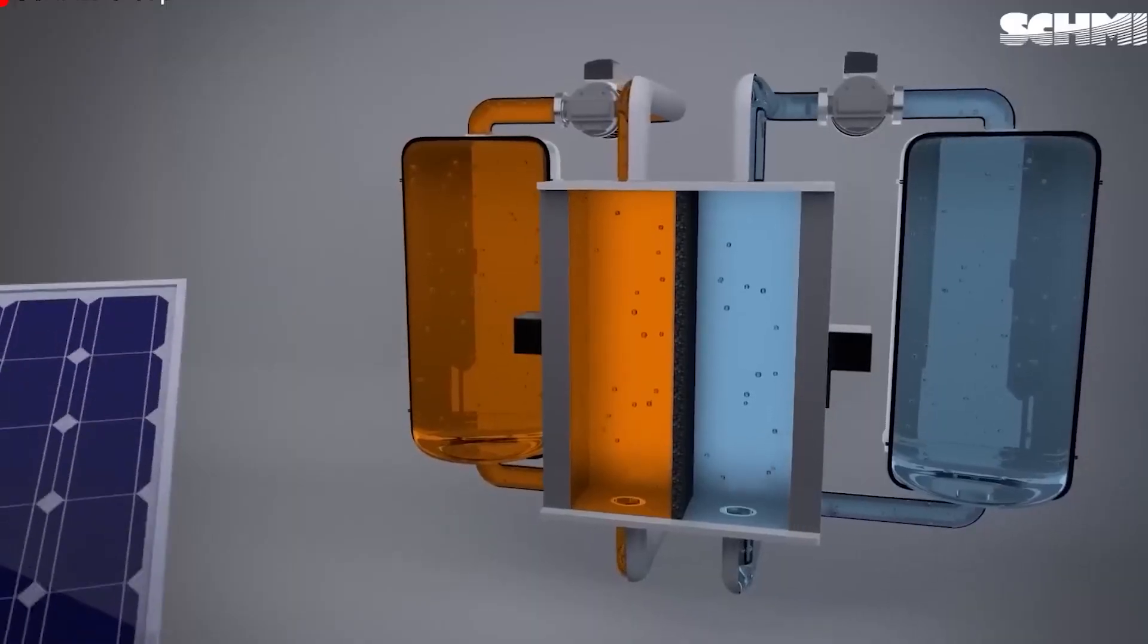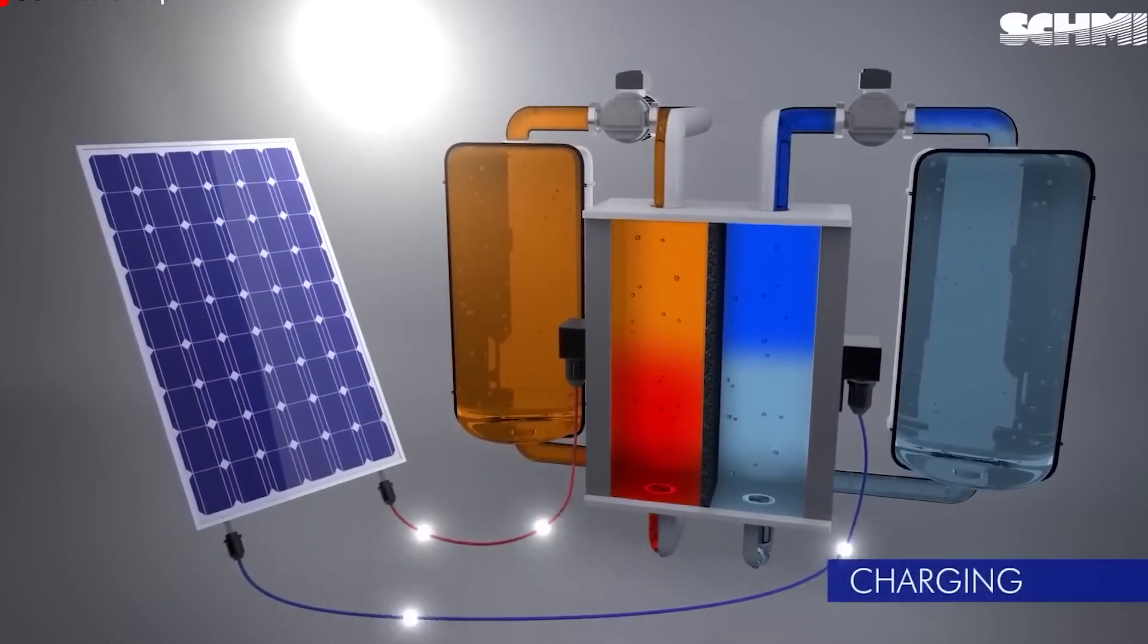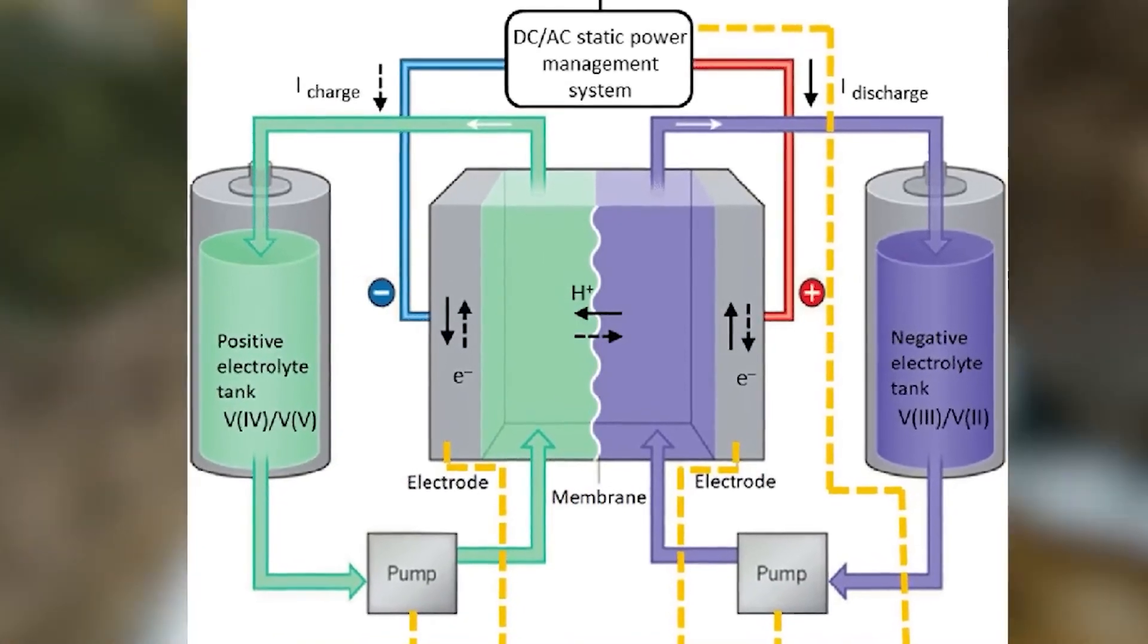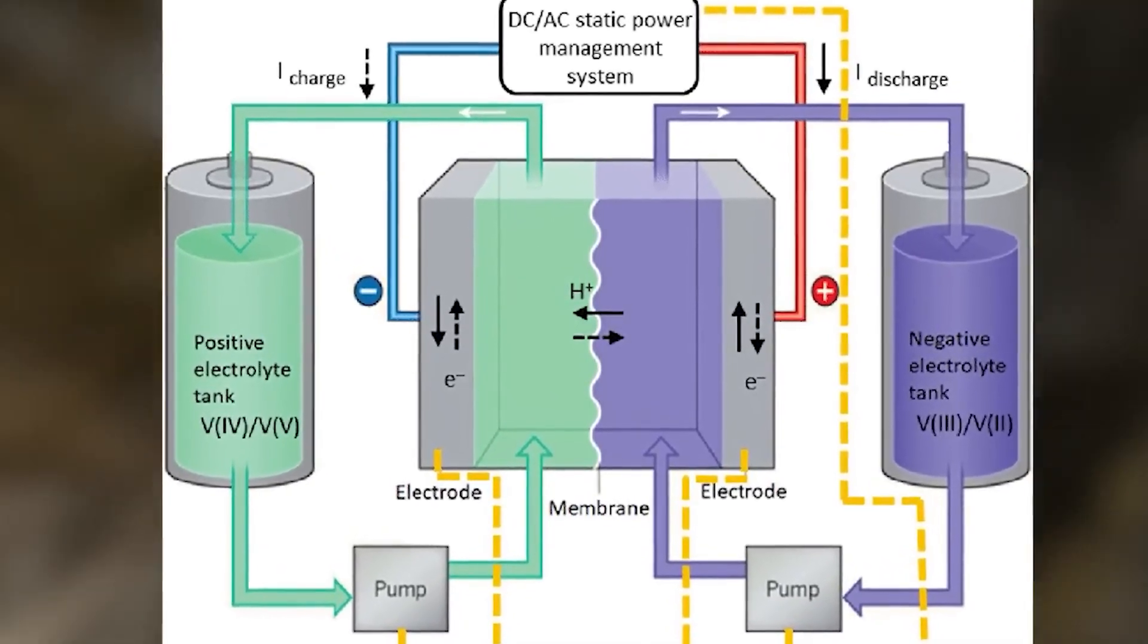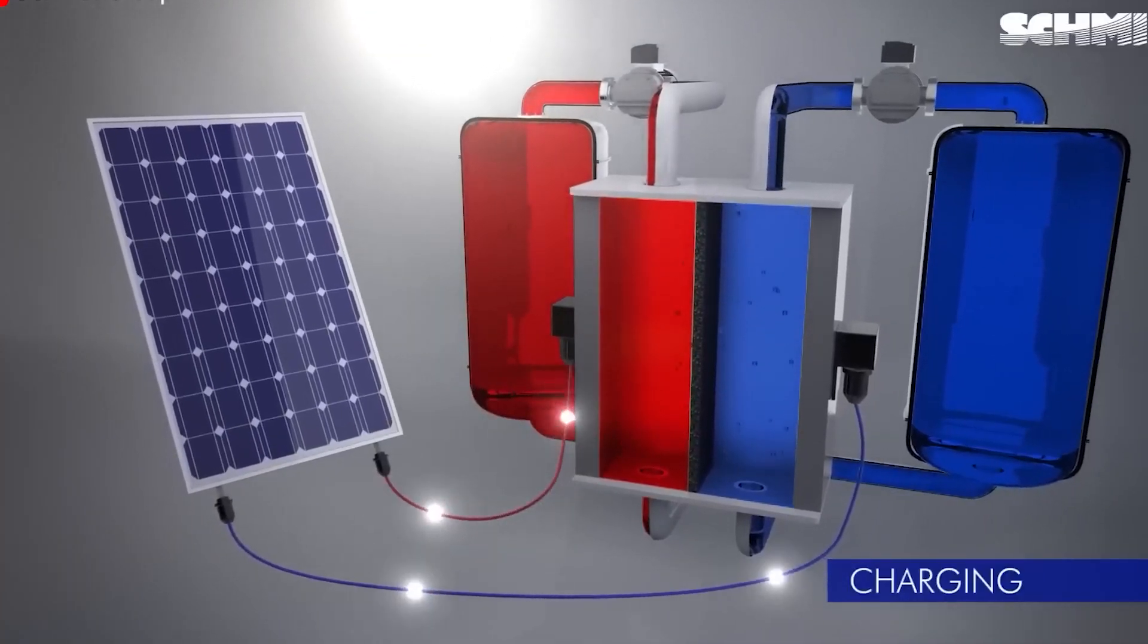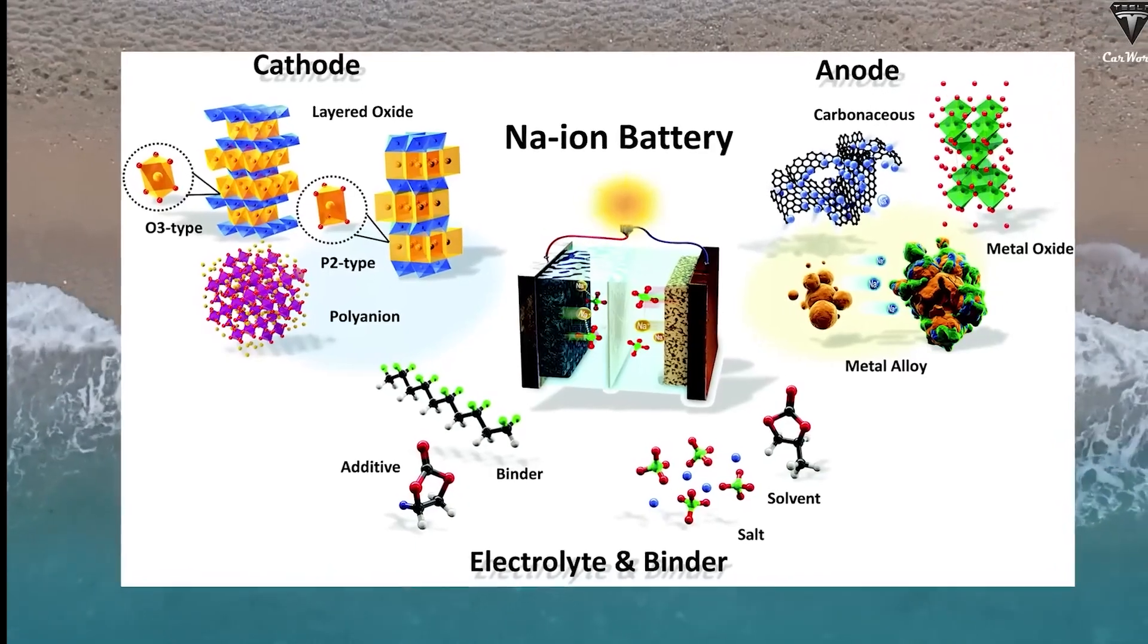During charging, electrons transfer from the catholite to the analyte, a phenomenon known as redoxing. The tanks contain a proprietary electrolyte with dissolved chlorine gas, while the other tank is filled with sodium chloride and water. This unique chemistry, similar to sodium batteries, generates electricity through the movement of sodium ions.